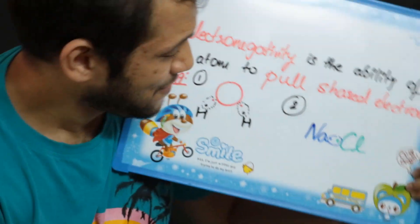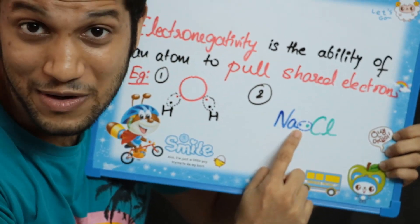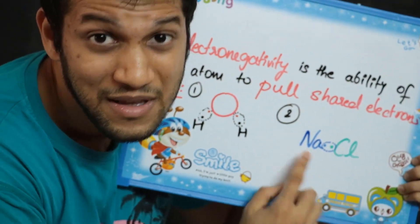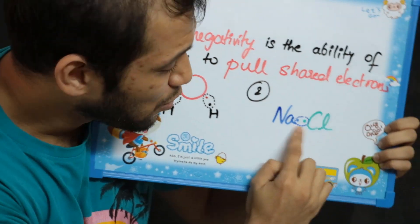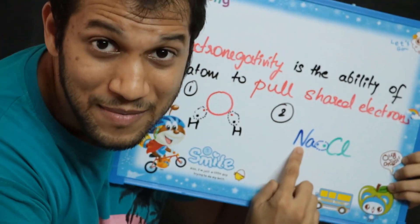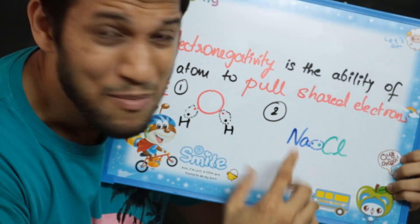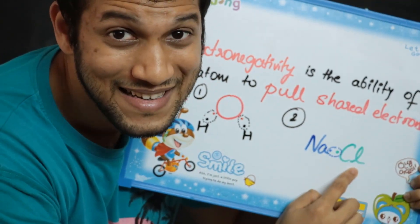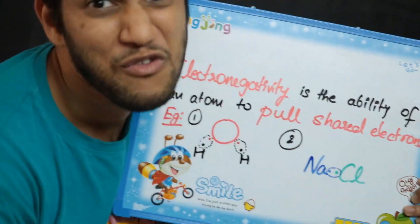Let's take another example. In sodium chloride, both sodium and chlorine share one electron. But chlorine turns out to be way more electronegative than sodium. That means the shared electrons get pulled more towards chlorine, so they spend more time near chlorine than sodium. And because chlorine is so much more electronegative than sodium, practically these electrons almost spend all their time near chlorine — it's as if chlorine has snatched both electrons for itself.